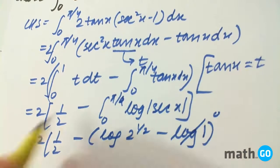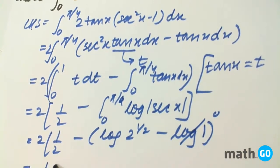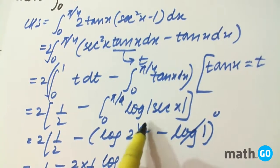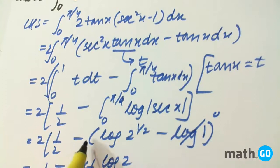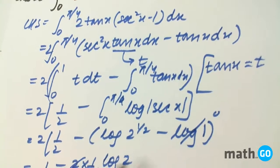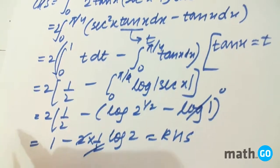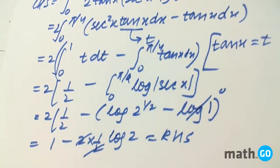So this is 0. We will be left with 1/2 minus 2 into 1/2 log 2, because if power is on the log it can be taken out. Hence we are left with 1/2 minus log 2. So this is 1/2 minus log 2.